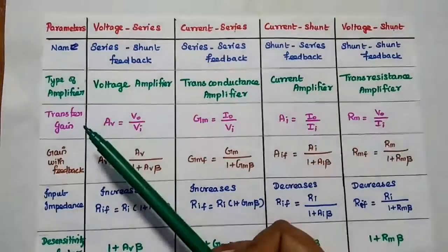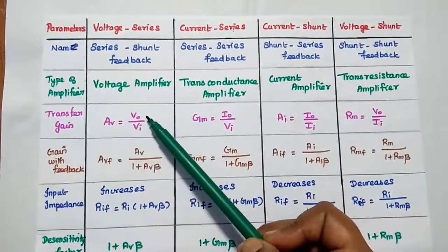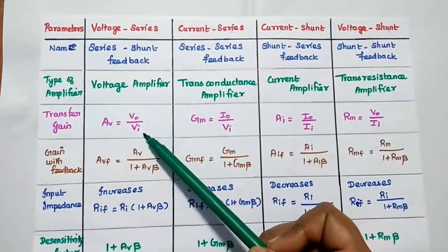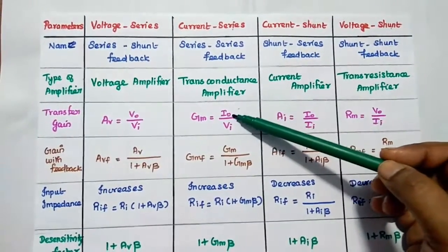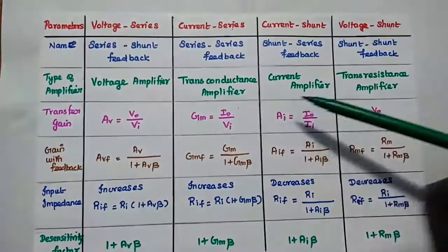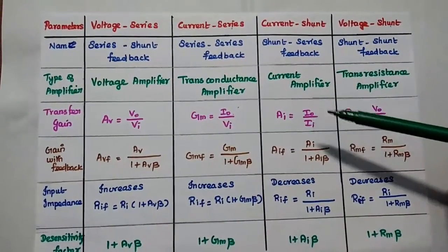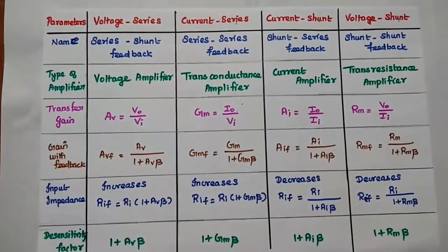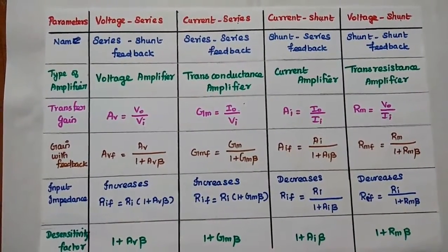You have to remember this. The transfer gain of the voltage amplifier is V₀/Vᵢ — output voltage by input voltage. For the transconductance amplifier, it is output current by input voltage. For the current amplifier, it is output current by input current. For transresistance, it is output voltage by input current.